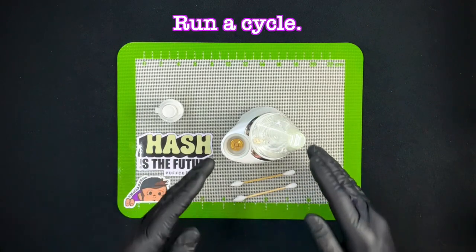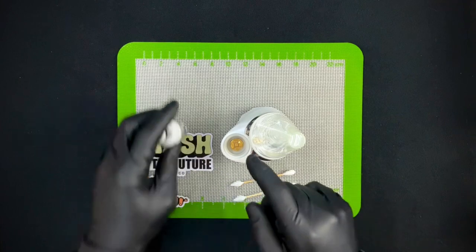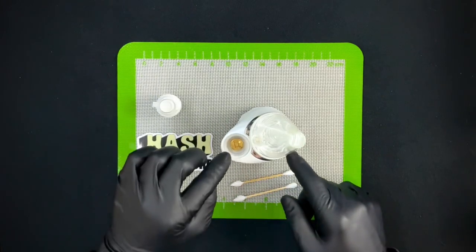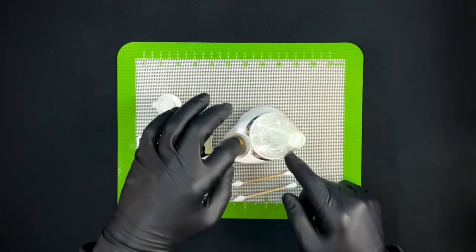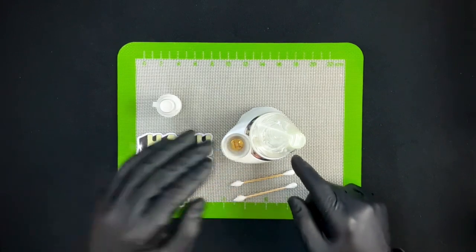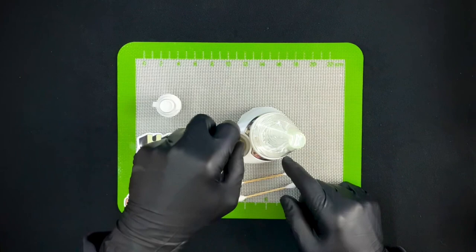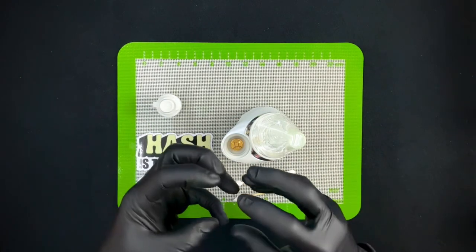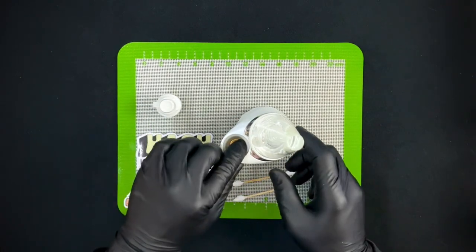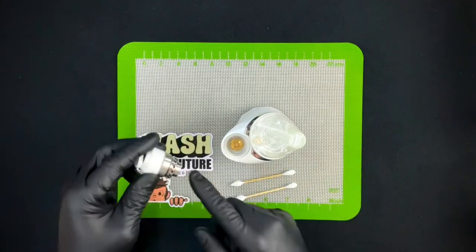You don't need to do a dab or waste any concentrate in order to take the chamber out, but I do recommend running a cycle because what's going to happen is if there's reclaim down in this bottom part and it's all sticky in there and this is cold, all of that stickiness is going to bind up and it's going to either tear this silicone in here or pull the pins out of the bottom of the atomizer.